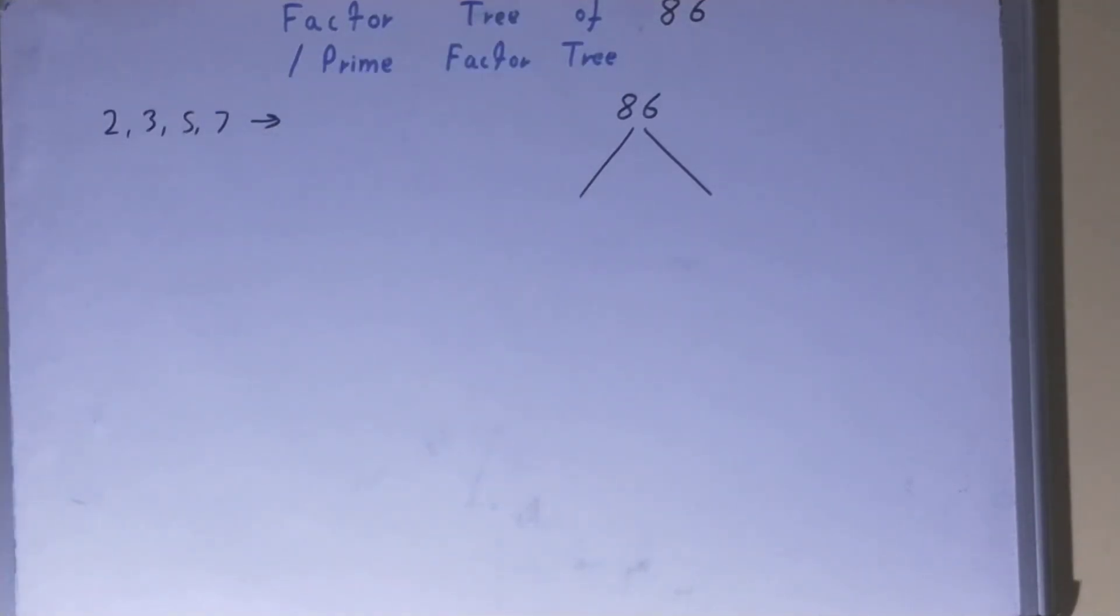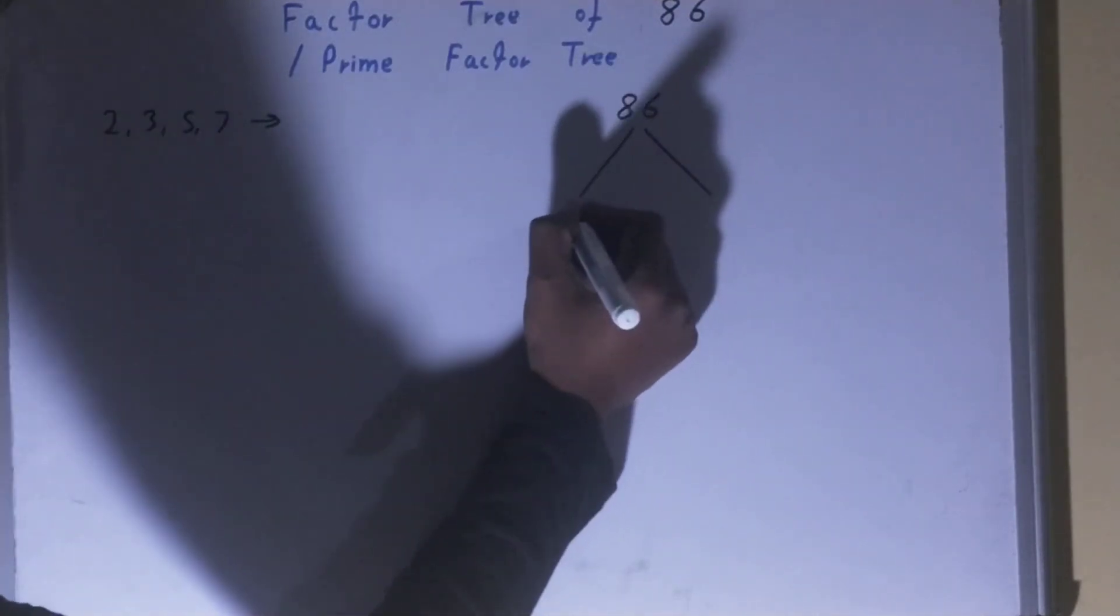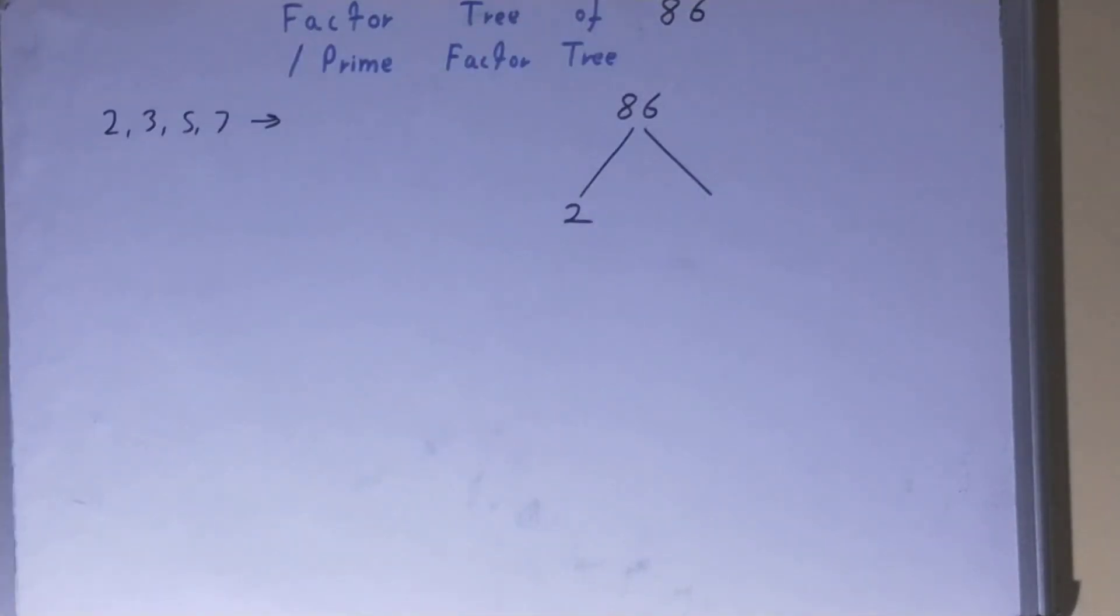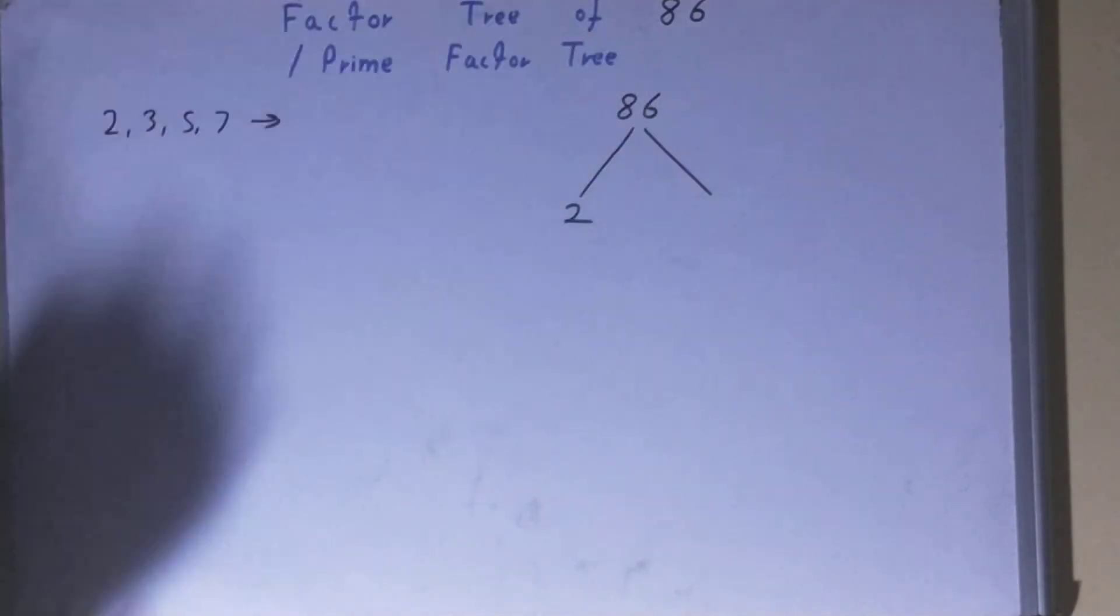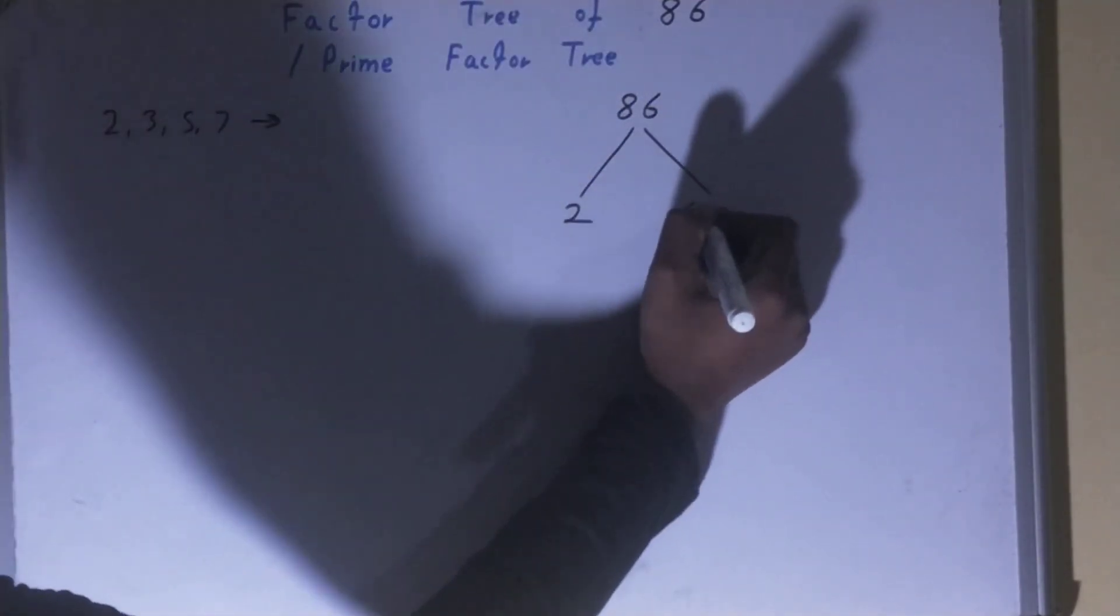So because of this, we check: is 86 divisible by 2? Yes. So one of the numbers will be 2, the other will be whatever we get after dividing. So 86 divided by 2 is 43, so the other number will be 43.